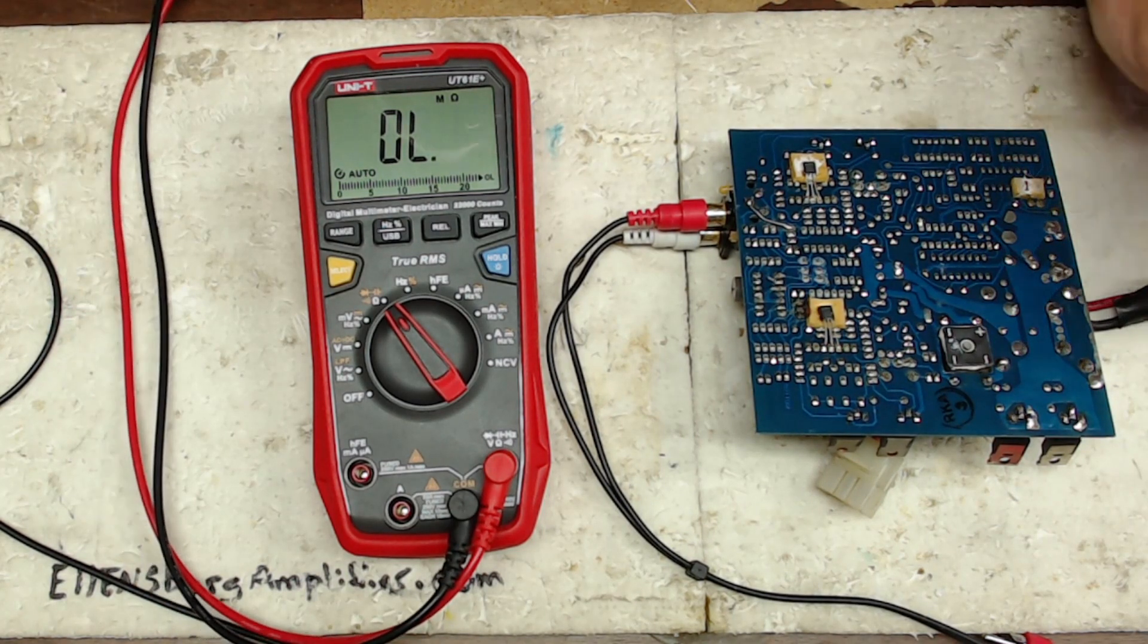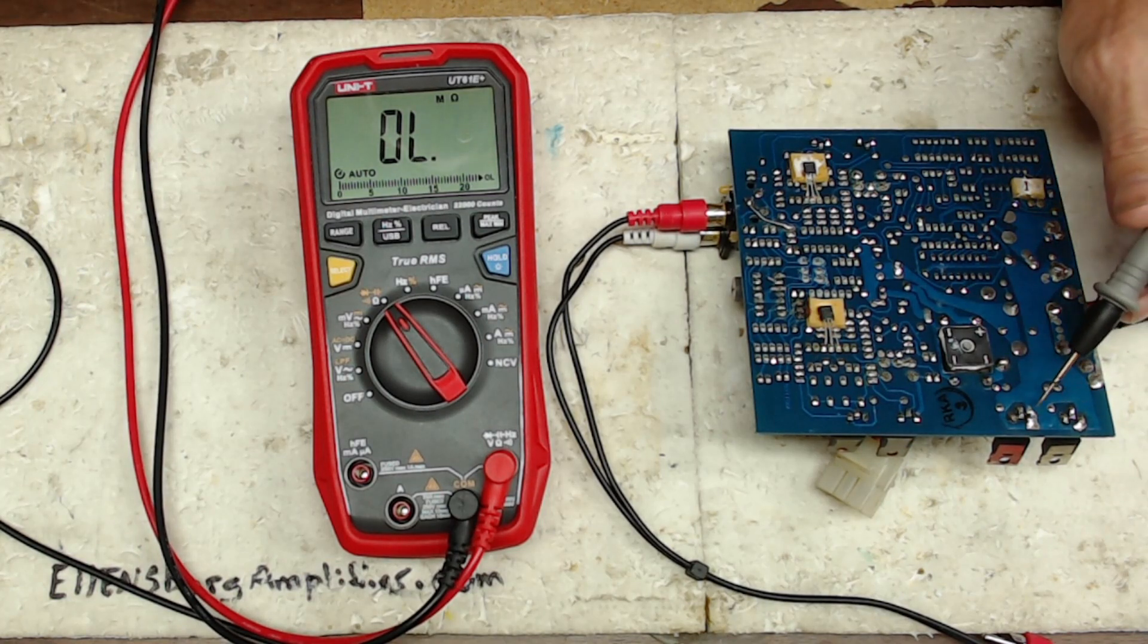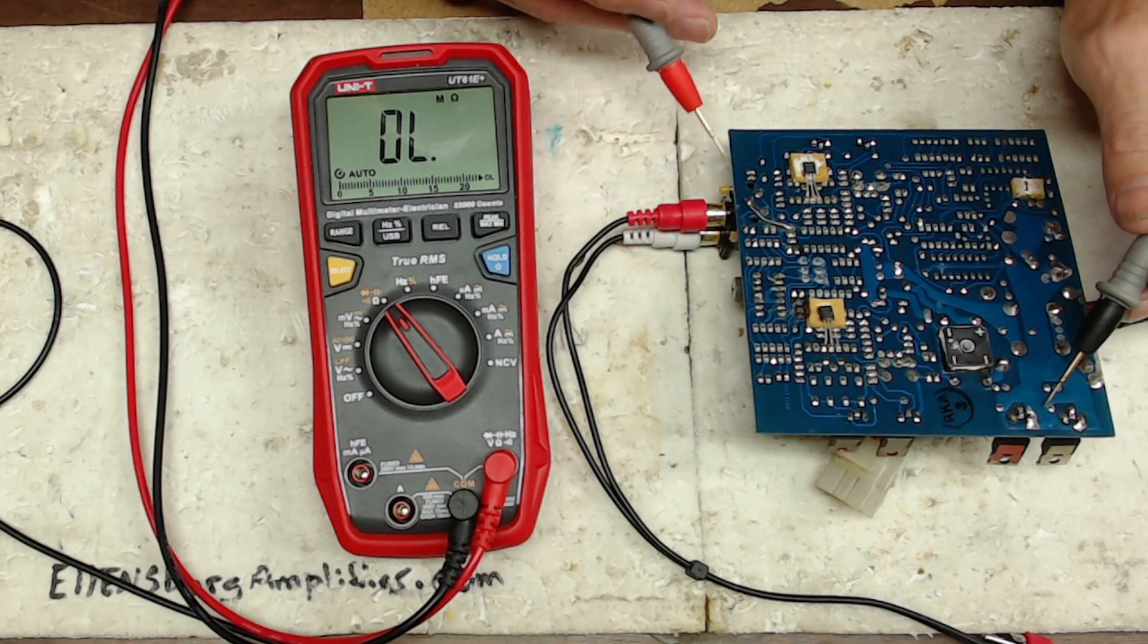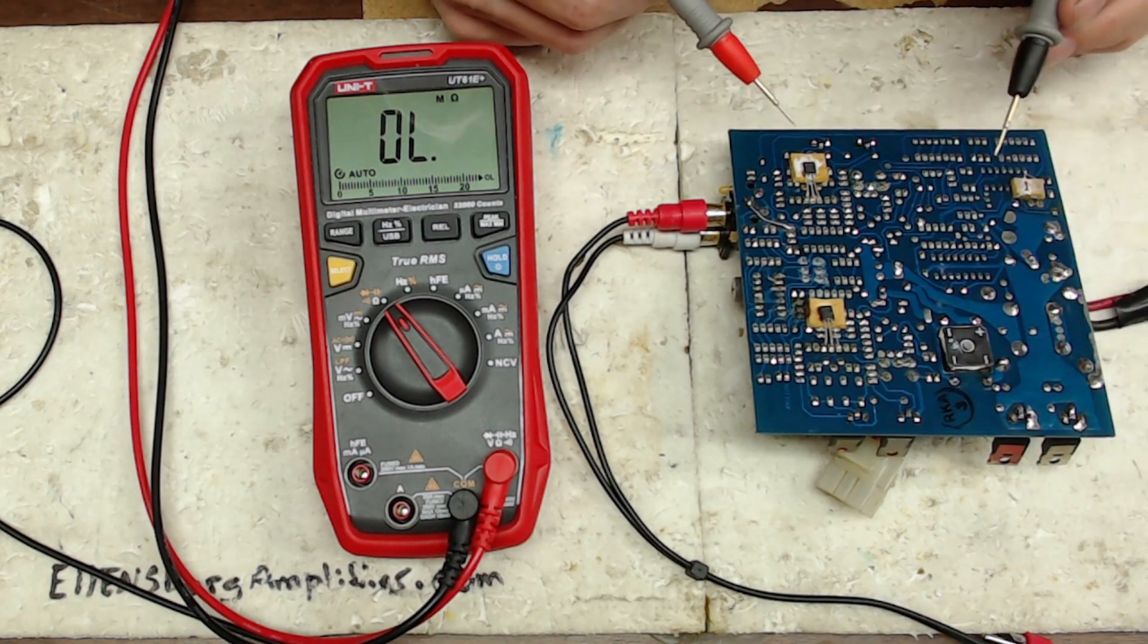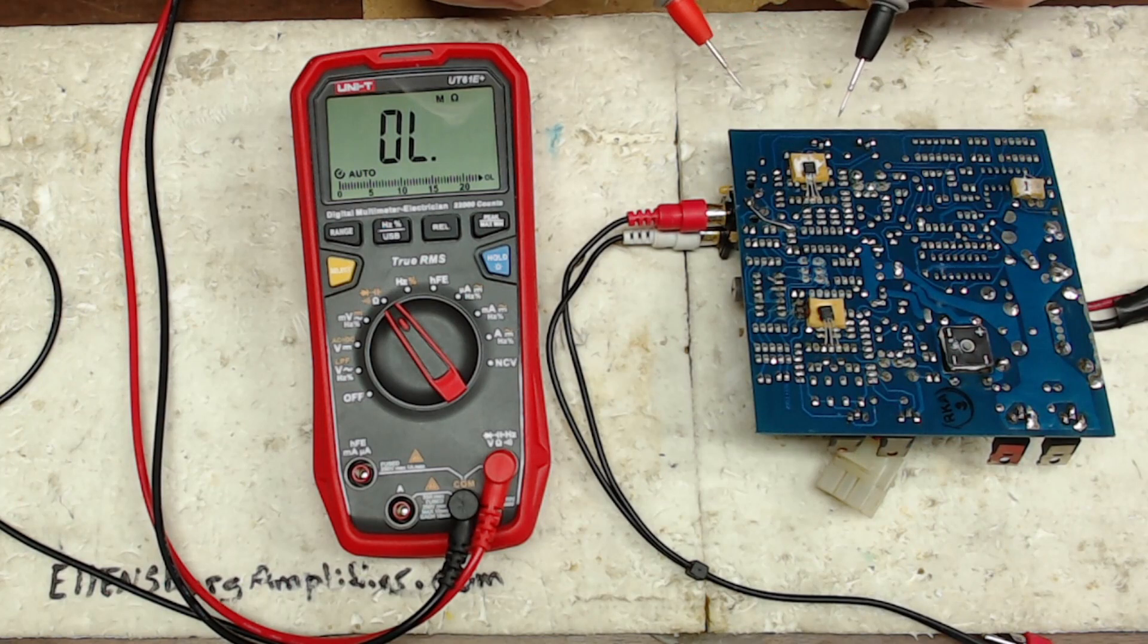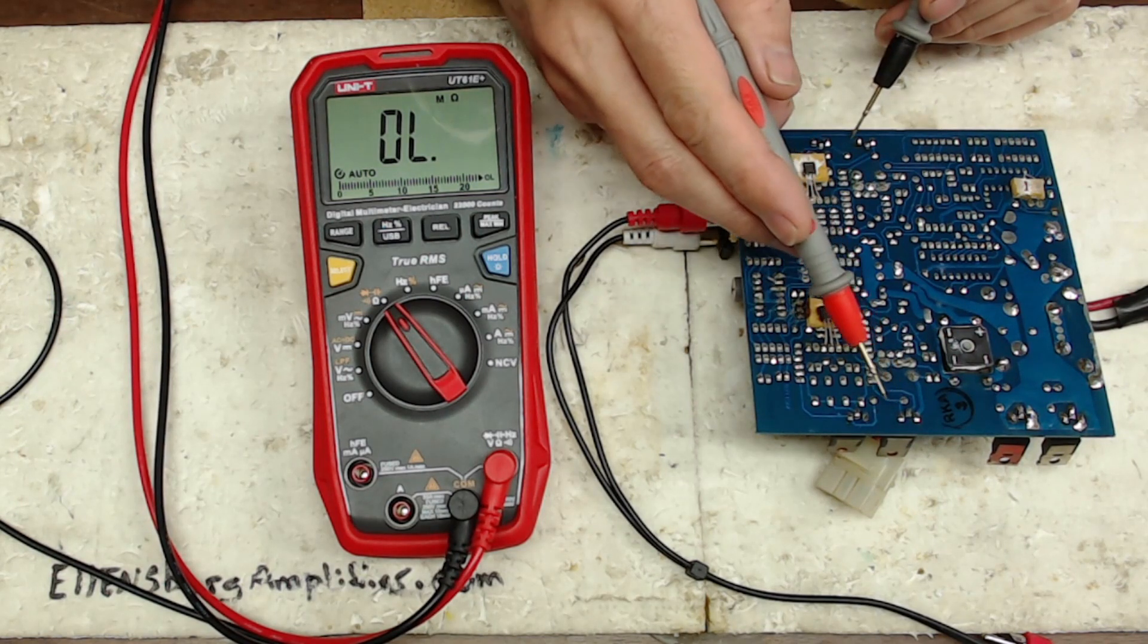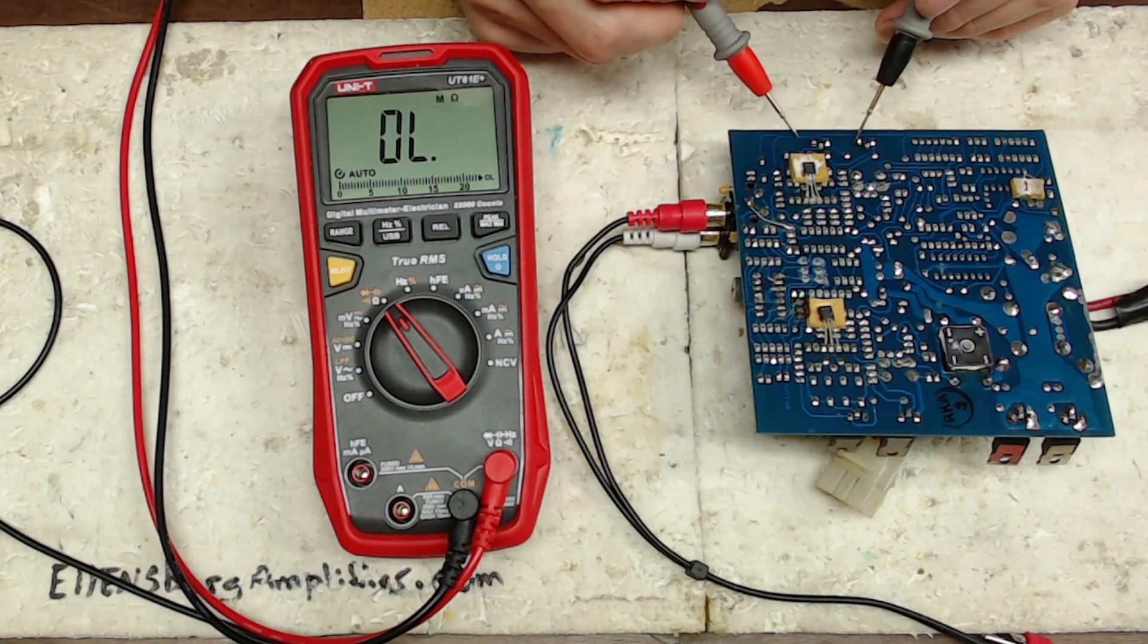That tells me there's a short on the output, and I've already tested the BD output transistors so there's no shorts there. I've checked the bias transistors, no shorts.